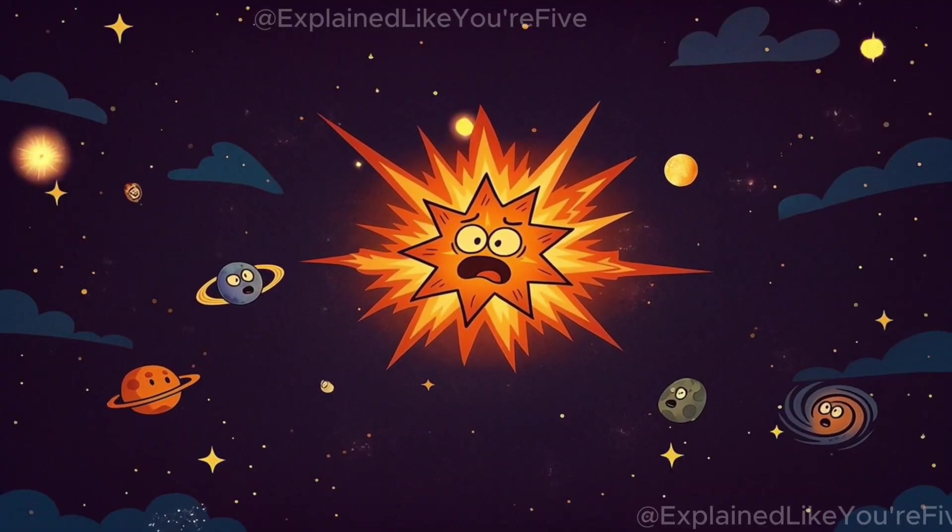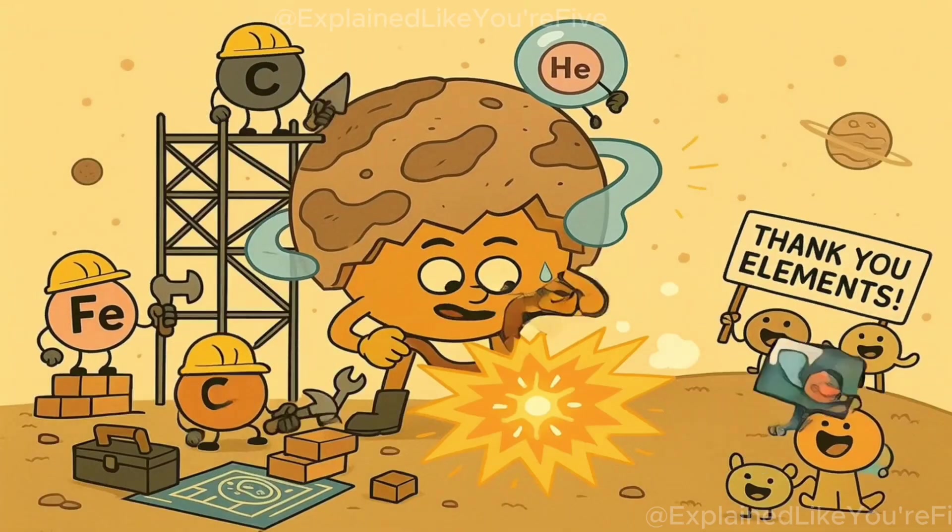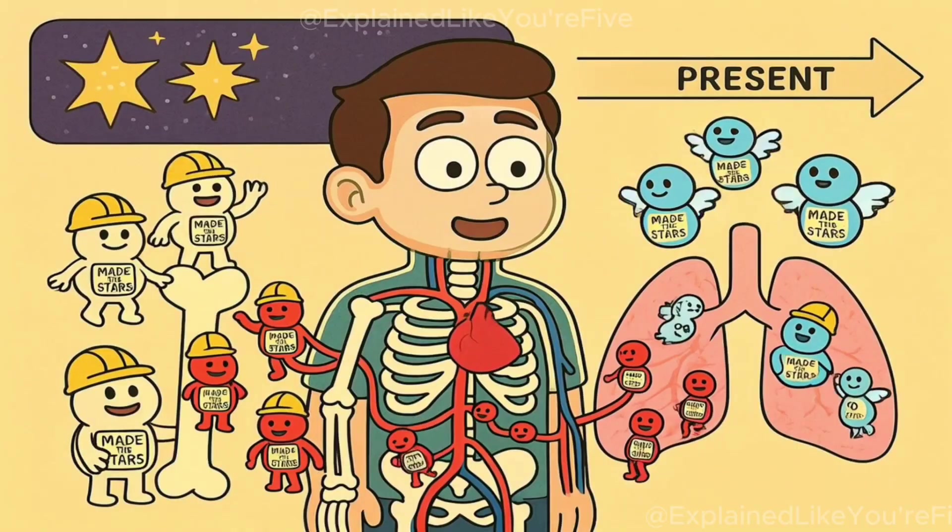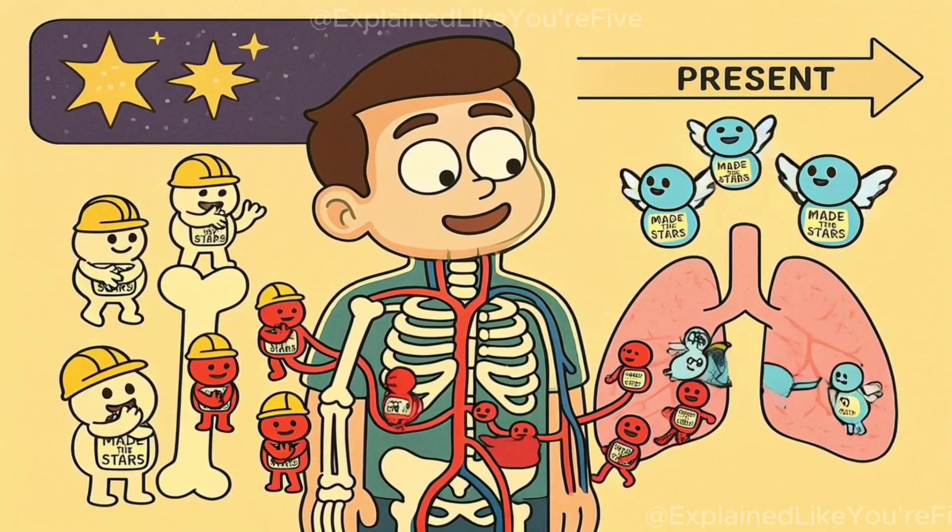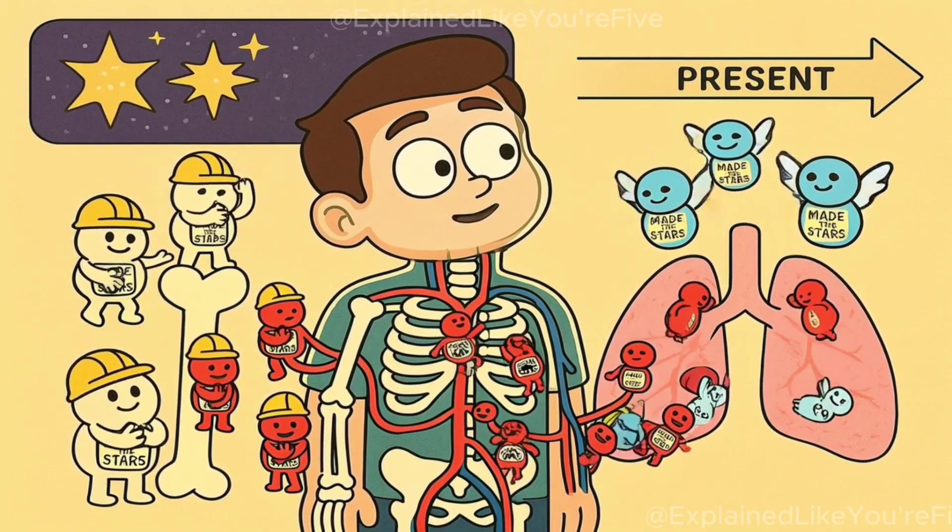Well, inside the cores of these first stars, nuclear fusion created heavier elements like carbon, oxygen, iron, and many others. When the stars exploded in supernovas, they scattered all of these new elements throughout space. These heavier elements are what actually made planets possible, and they're also what made life possible. The calcium in your bones, the iron in your blood, and the oxygen that you breathe were all created inside of stars billions of years ago.